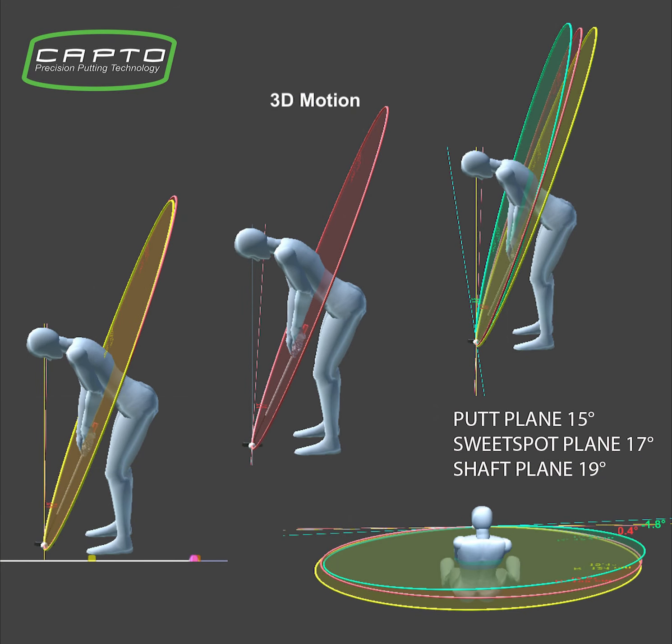Sweet spot plane — the red one — is generated by sweet spot locations. It's a 3D circle coming from the best fitting of the sweet spot's subsequent downswing positions from transition to finish.